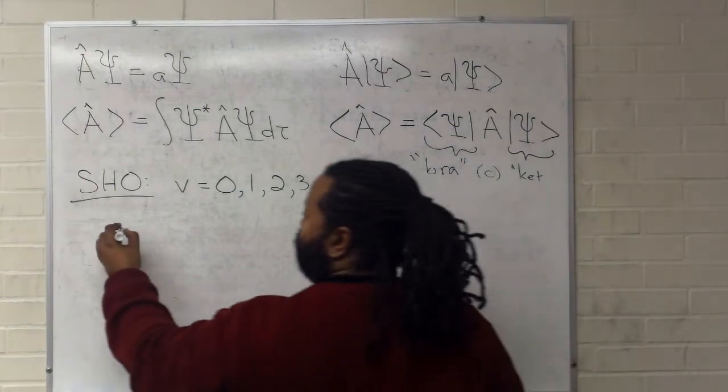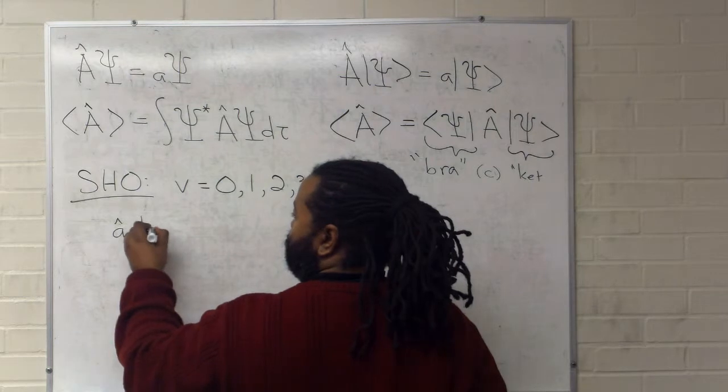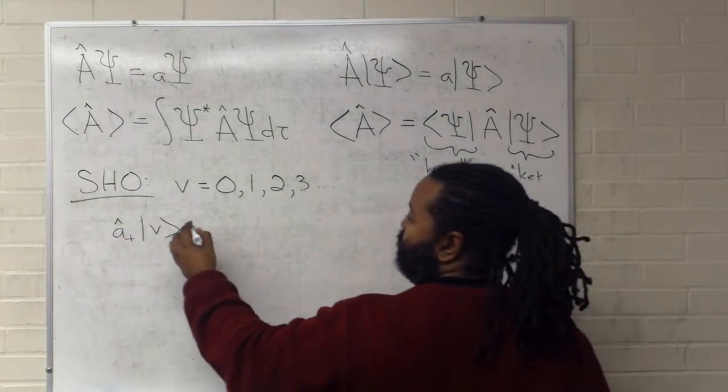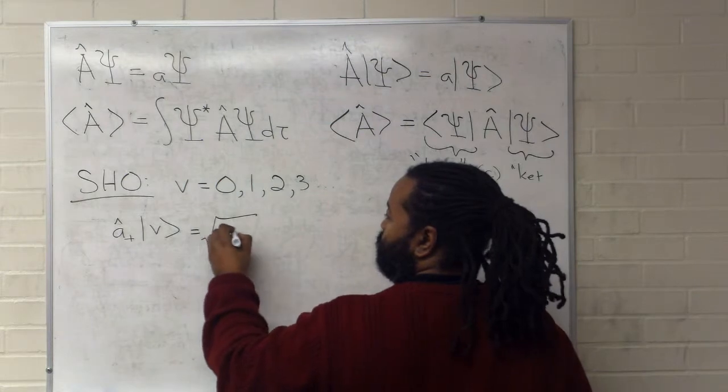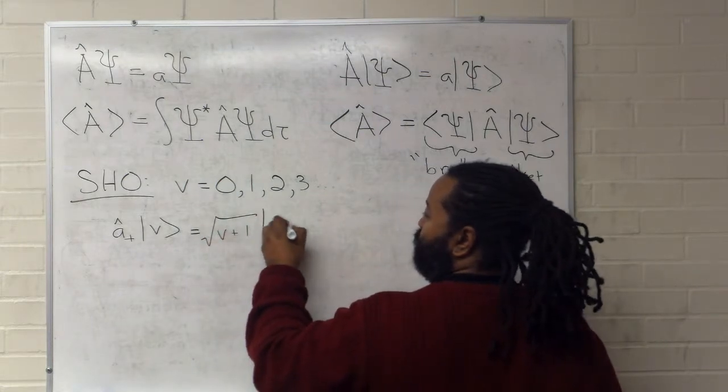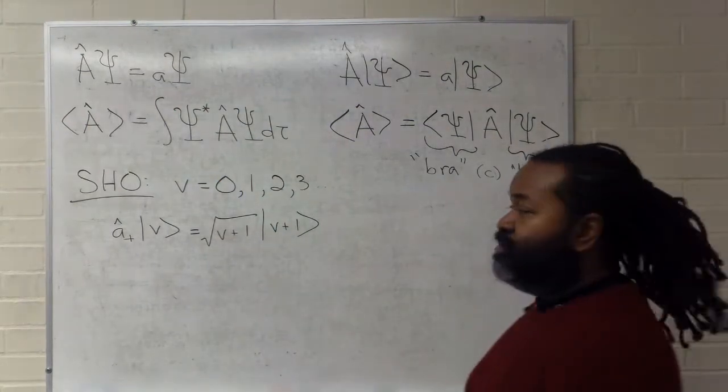then we can define a raising operator as acting on a ket, giving us the following result. It extracts the value in a square root, and then adds one to it.